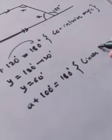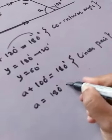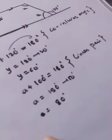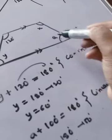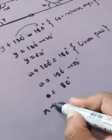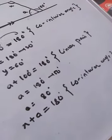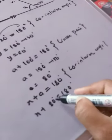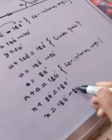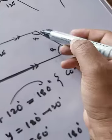Now, just as y and 120° are co-interior angles, x and a are also co-interior angles. So: x + a = 180° (co-interior angles). Since a = 80°, transposing: x = 180° − 80° = 100°. So the value of x is 100°.